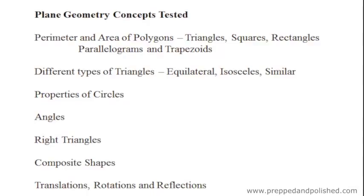Composite shapes are when they take two standard shapes, such as a square and a triangle, and they may ask you to find the area or perimeter of that shape. You should also be familiar with translations, rotations, and reflections.